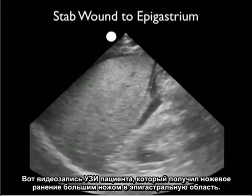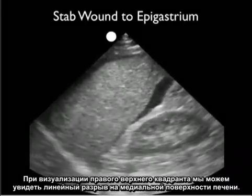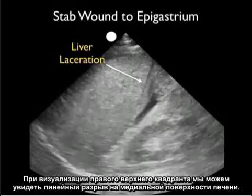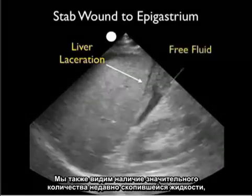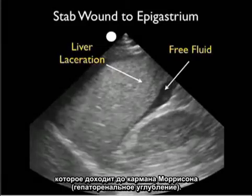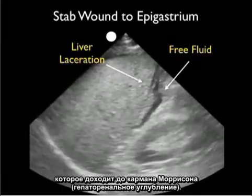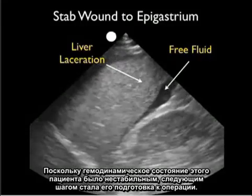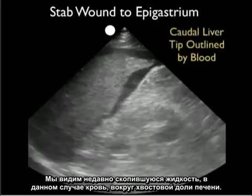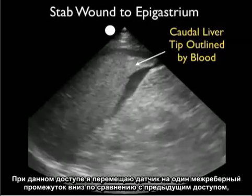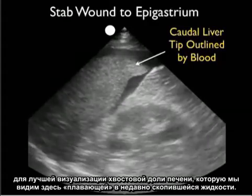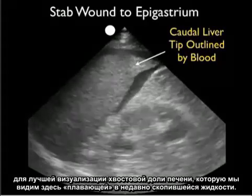Here's a video clip from a patient who was stabbed with a large knife to the epigastric region. As we look at the right upper quadrant, we can see a linear liver laceration extending through the medial aspect of the liver. We also appreciate a large amount of fresh fluid — that dark or anechoic fluid collection layering out posteriorly to the liver and extending into Morrison's pouch, the hepatorenal interface. As this patient had unstable hemodynamics, the next move was to prepare for the operating room. We can see the caudal tip of the liver waving around in all the fresh blood, a view obtained by moving the probe one intercostal space inferior.